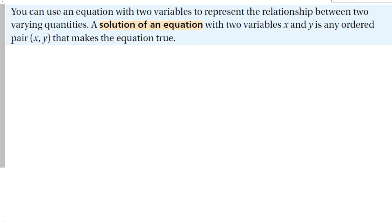We can use an equation with two variables to represent the relationship between two varying quantities. A solution of an equation with two variables x and y is any ordered pair (x, y) that makes the equation true. We're going to do a lot of stuff with lines and other equations that have two variables. My answer is going to have an input and an output — the x and y coordinate.